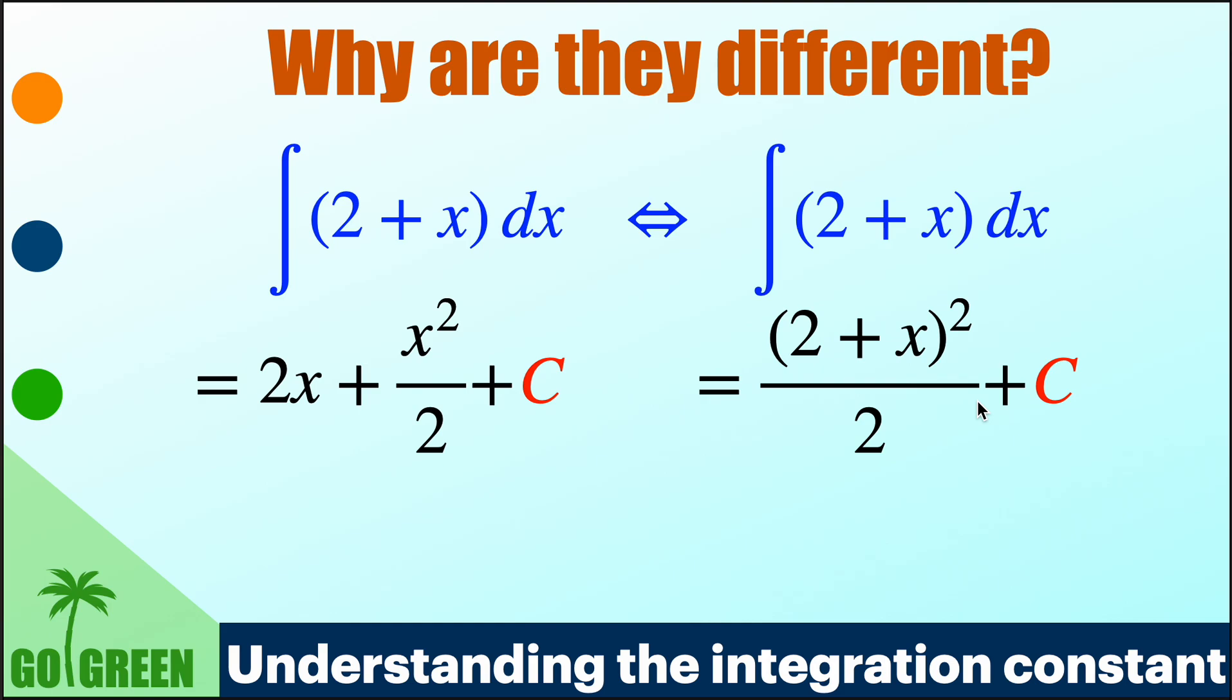So one way of calculating it would result in this function 2x plus x squared by 2 plus C, but another method can give you 2 plus x whole squared by 2 plus C. So if we disregard this integration constant, we will be getting apparently two different functions. Actually they are different functions. Let us first do the integrations and see whether we actually get these functions.